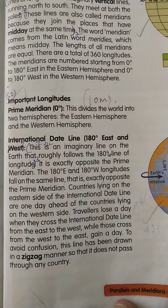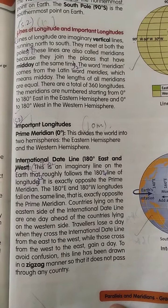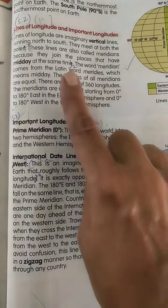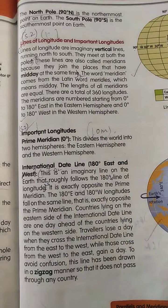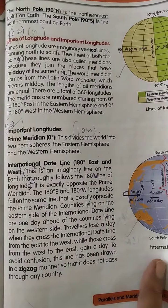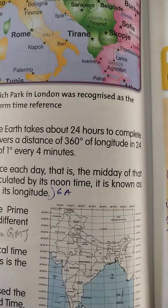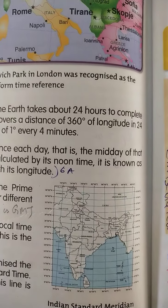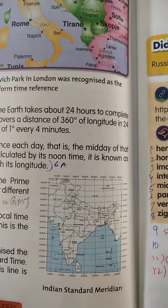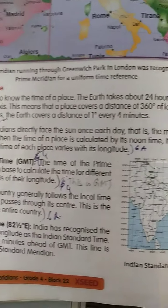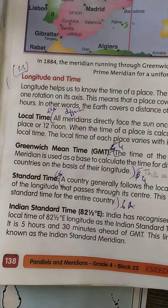Important line of longitude — International Date Line. This full paragraph read to full, like this. For map pointing, outline map, page number 138.